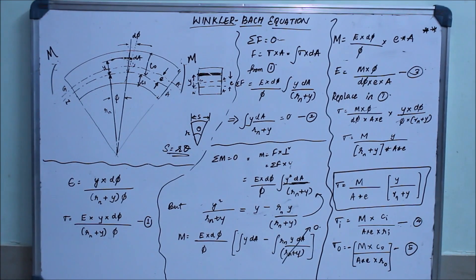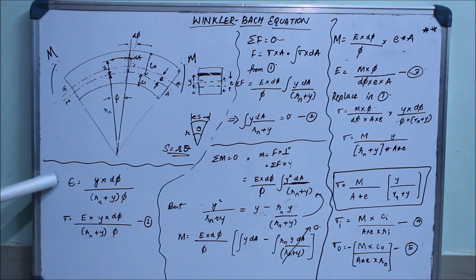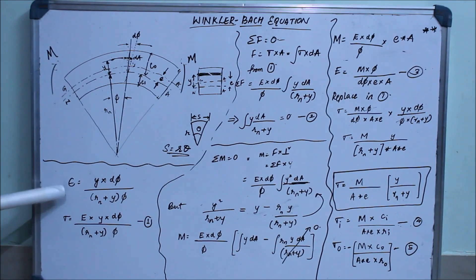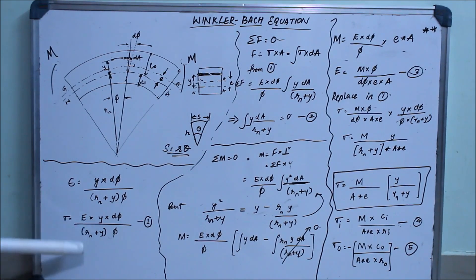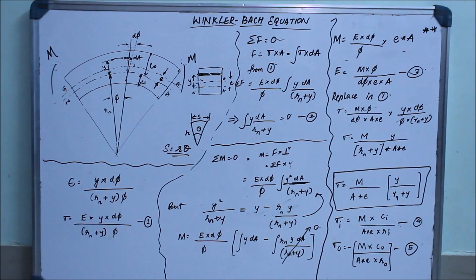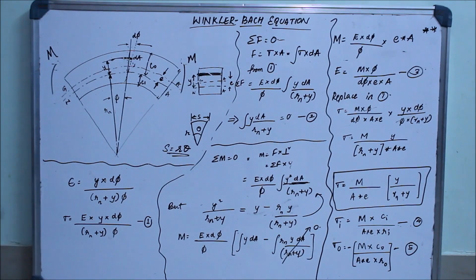To get stress, you multiply both sides by the Young's modulus of elasticity. The strain cancels, and you are left with bending stress equals E·(y·delta phi) divided by (rn + y)·phi. This is the first important equation.